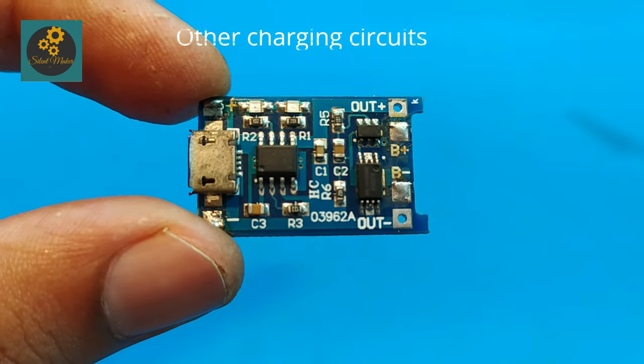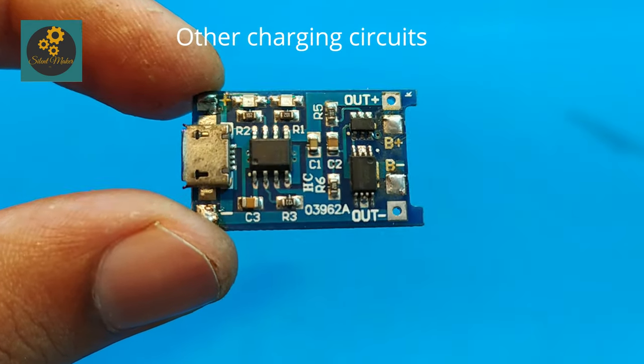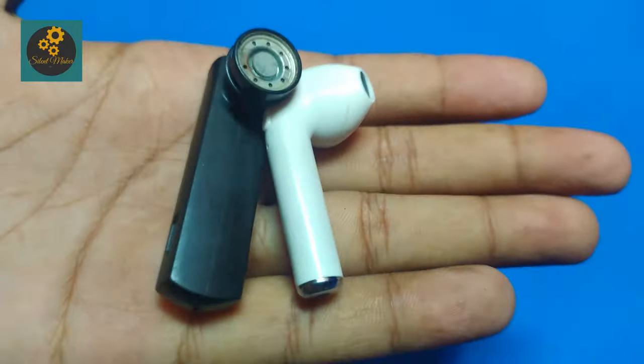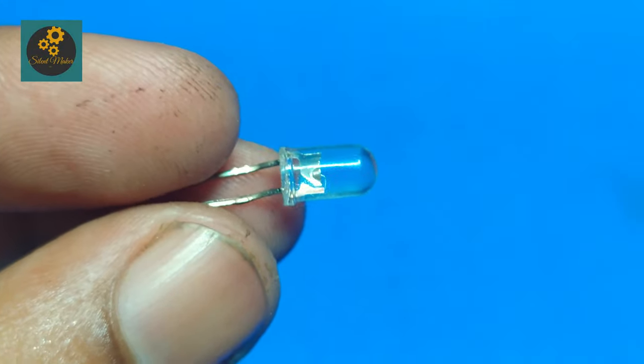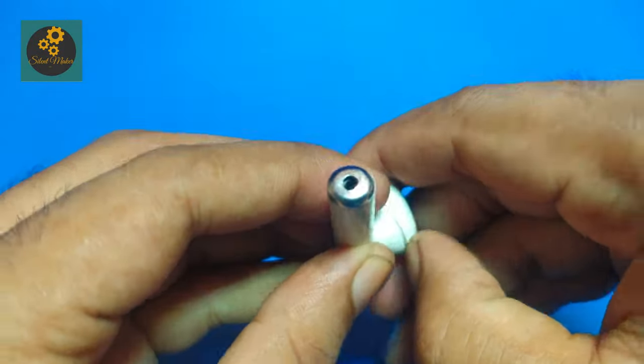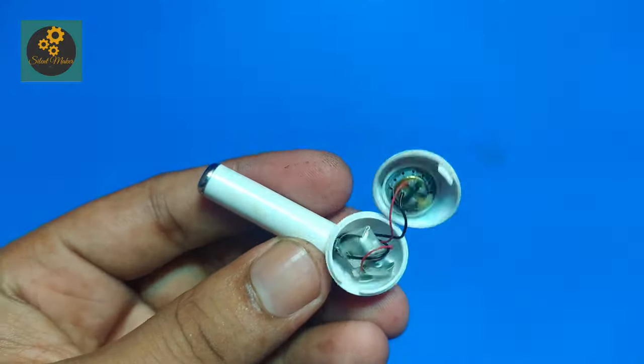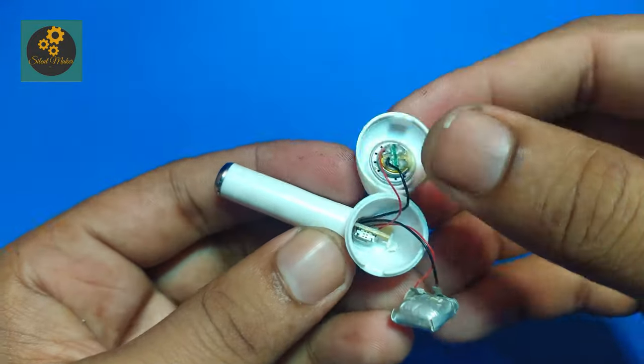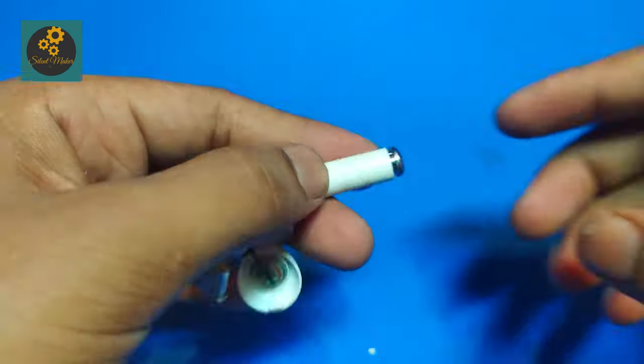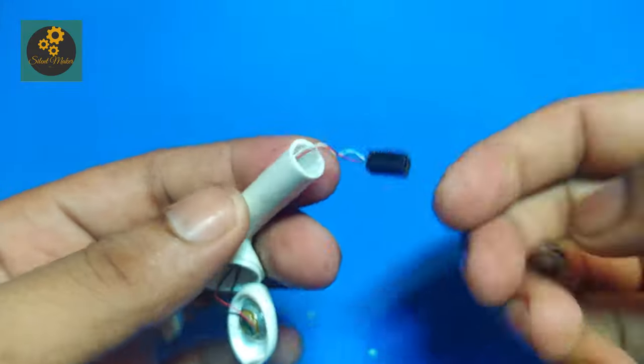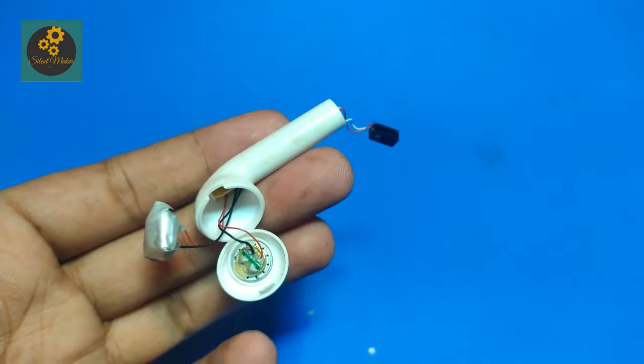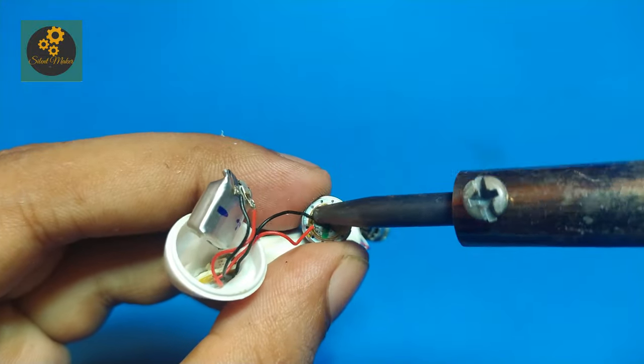So let's start. You need earphone buds and LED. Firstly, open the earphone bud carefully. We have to take out this circuit and modify it according to the torch.